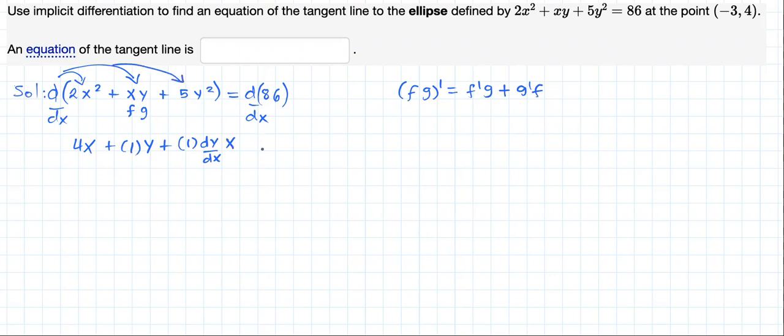Next derivative, 5y squared. The derivative should be 2 times 5, 10 times y, but since we are taking derivative with respect to x, we have to multiply this by dy/dx. The derivative of the constant function 86 is just 0.